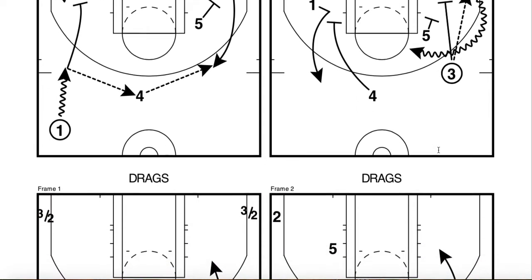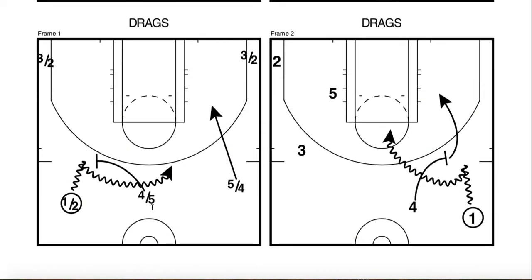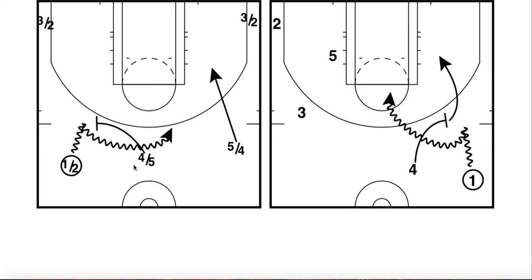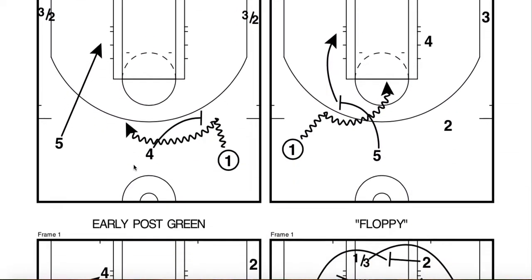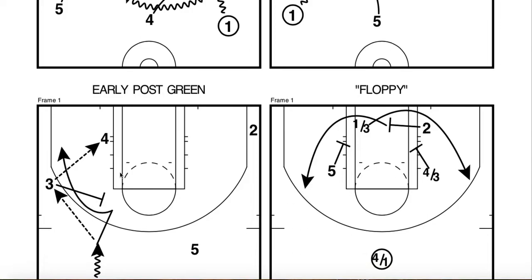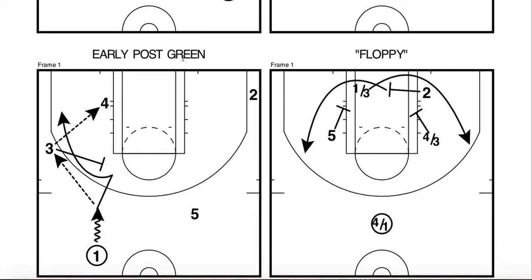Drag — early pick-and-roll in transition. That's what a drag is — an early ball screen. You see the different angles and different ways that they run it. Early post green: this is on here to detail the post splits. Throw it to Green in the post — usually not doing that to actually post Draymond, but to get to their split action, which they run so well. It could be Steph flaring off the screen, he could back cut, or the screener could slip. They play a whole bunch of different games with it and just read it.